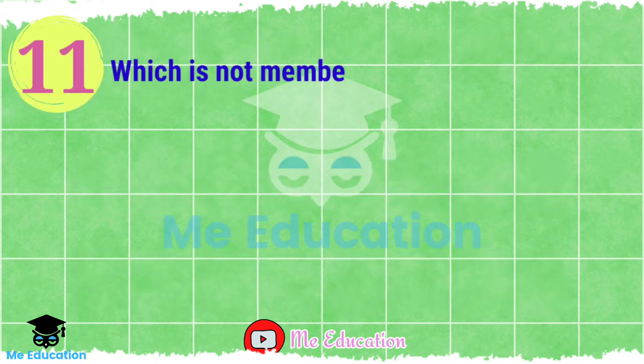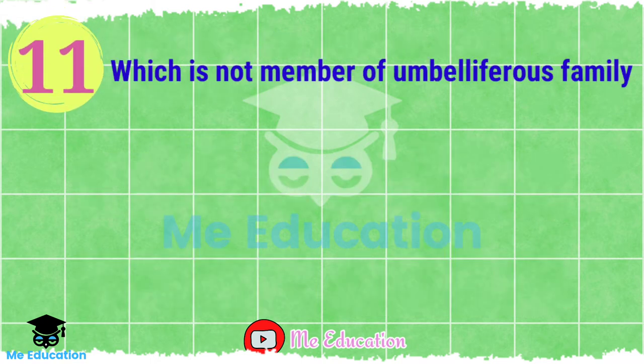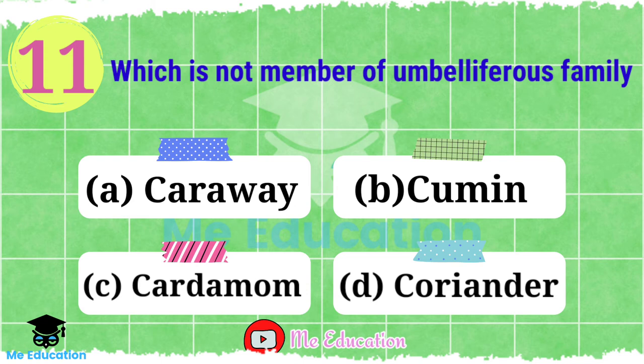Question number 11: Who is not a member of the Umbelliferae family? Option A: caraway; Option B: cumin; Option C: cardamom; Option D: coriander. Now pause the video and try to solve the question. The right answer is Option C, cardamom.